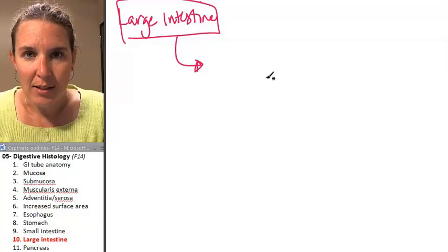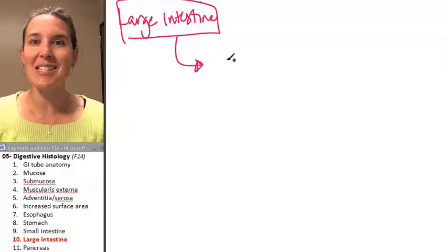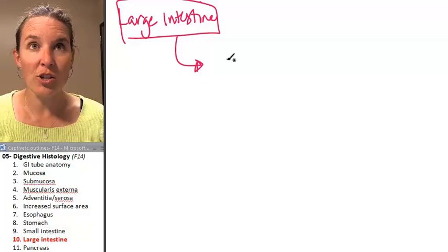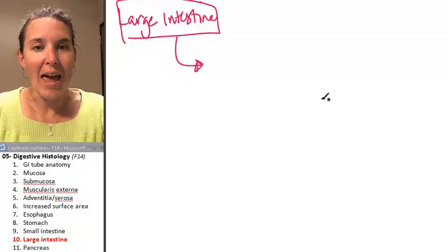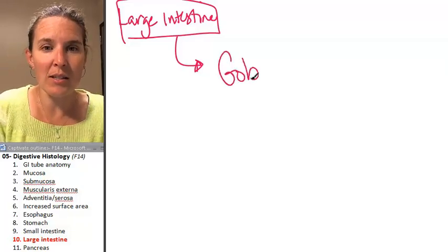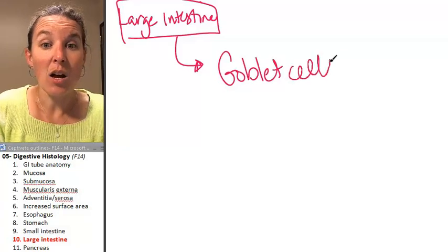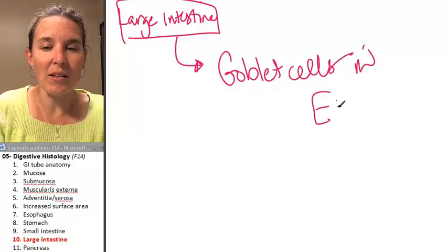In the large intestine, you're going to see lymphatic nodules. You're just not going to see billions of them. And the key that we're going to look for is goblet cells. Goblet cells in the epithelial tissue.